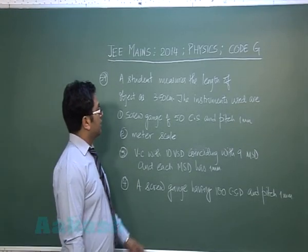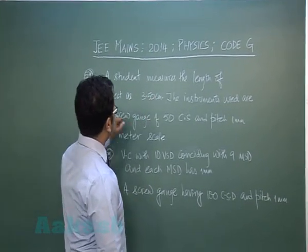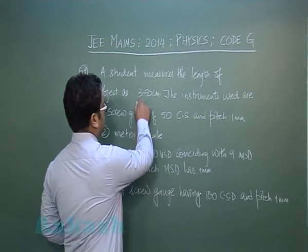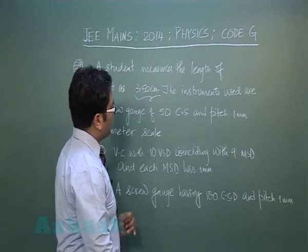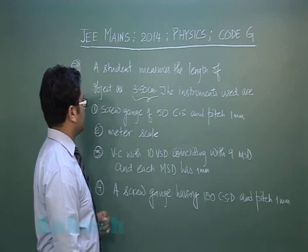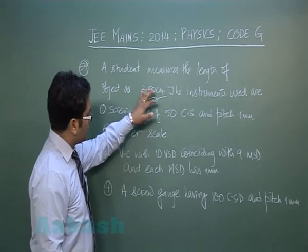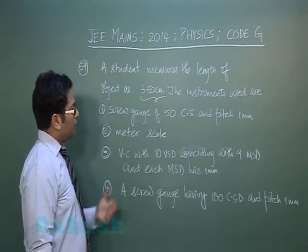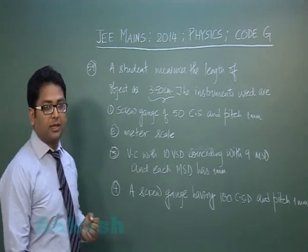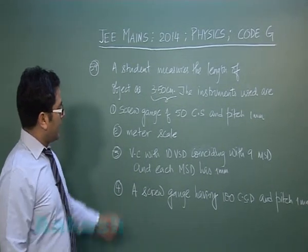Question number 59: A student measures the length of an object as 3.50 cm and we need to find out which instruments were used for this measurement. Quite obviously, the key is calculating least count, and out of all these four devices...